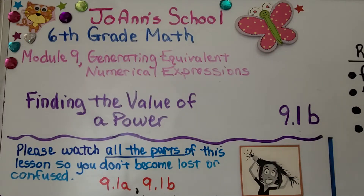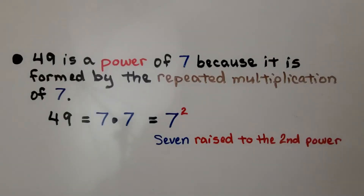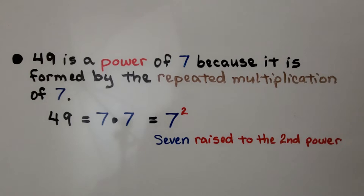Lesson 9.1b: Finding the Value of a Power. 49 is a power of 7 because it is formed by the repeated multiplication of 7. 49 is equal to 7 times 7, which equals 7 raised to the second power.